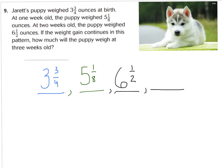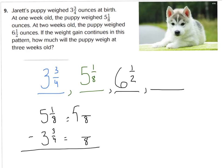Let's subtract the first two terms: 5 and 1 eighth minus 3 and 3 fourths. Finding common denominator: 4 and 8 share a common denominator of 8. 5 and 1 eighth remains the same; 3 and 3 fourths equals 3 and 6 eighths. I can't take 1 eighth minus 6 eighths, so I regroup — borrow a whole and add 8 eighths to 1 eighth, giving 9 eighths. 9 eighths minus 6 eighths is 3 eighths, and I have 1 whole remaining. I'm predicting the pattern is increasing by 1 whole and 3 eighths.